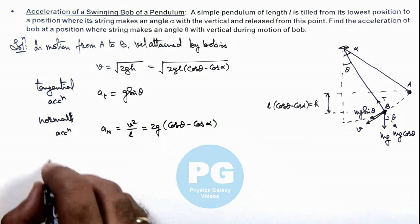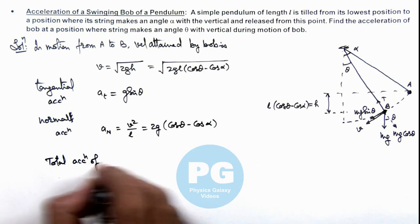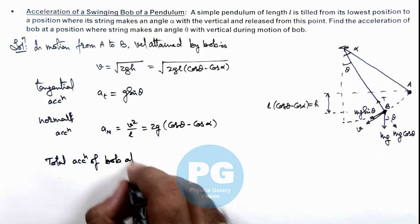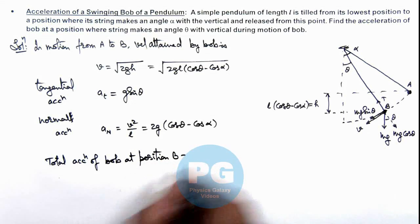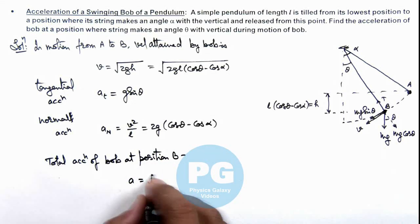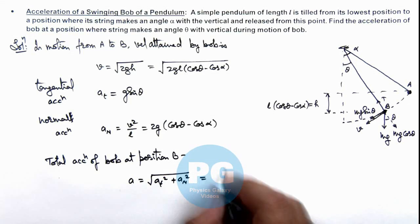So total acceleration of the bob at position B can be given as a = √(aₜ² + aₙ²). If we substitute the values...